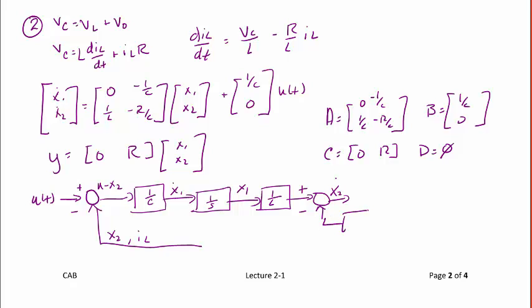So what's fed back right here is R over L. And if we integrate x2 dot, the output here is x2. If we multiply x2 by R, then the output here is y because y is equal to R times x2.